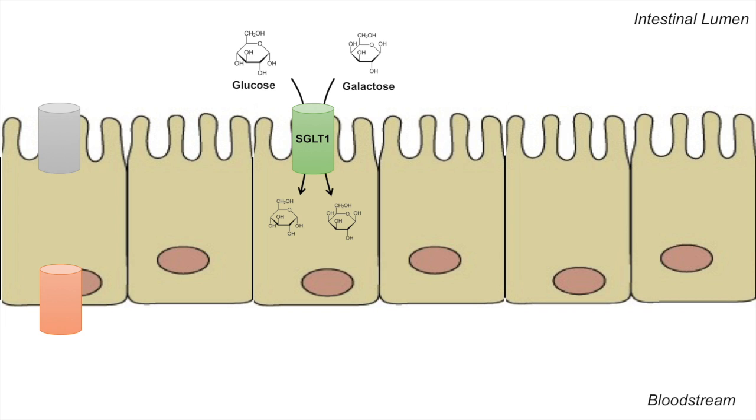And this is the same transporter that glucose uses to get into an intestinal endothelial cell as well. So once galactose or glucose has been transported into an intestinal endothelial cell, they're actually transported out of the intestinal endothelial cell through GLUT2 into the bloodstream.